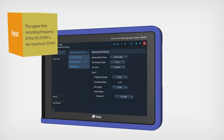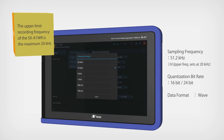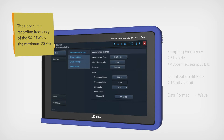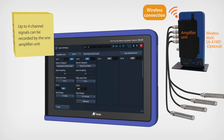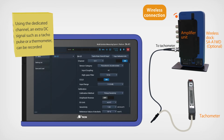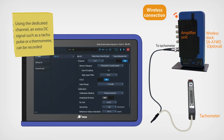The upper limit recording frequency of the SX-A1WR is a maximum of 20 kHz. Up to four channel signals can be recorded by one amplifier unit. Using the dedicated channel, an extra DC signal such as a tachopulse or a thermometer can be recorded.